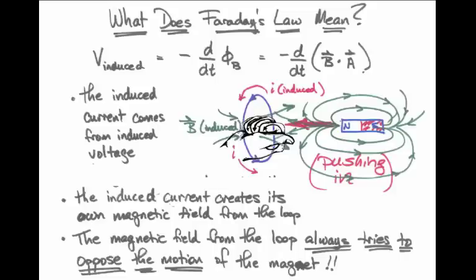The way that works is you should imagine trying to shove that bar magnet through the loop, and there is a force exerted backwards against you, opposing what you would like to do. If you're trying to shove the bar magnet north pole in, there has to be an opposing force from this induced current that tries to push the bar magnet right back out again.